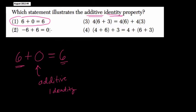Here, choice 2, this is the additive inverse property, because you're adding two opposites and getting 0.